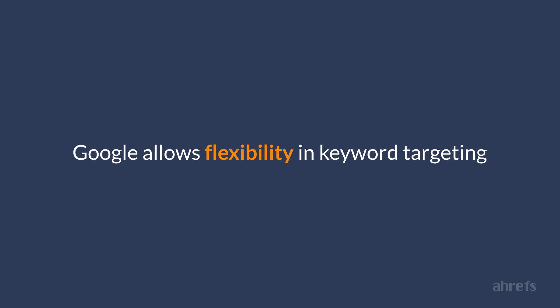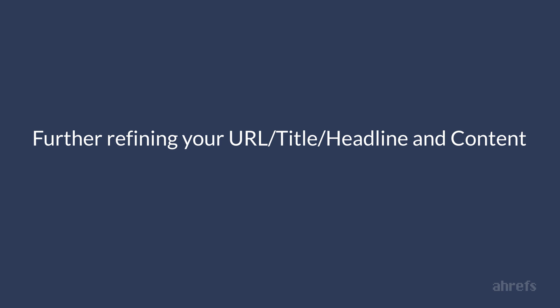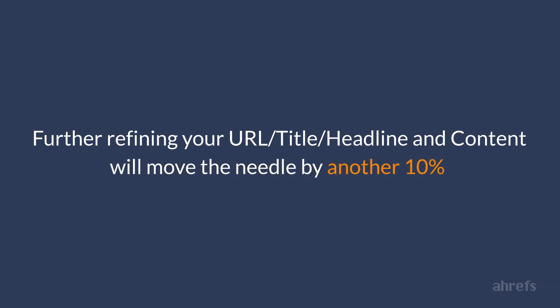That is why, by simply matching the searcher intent with the content of your article, you're already making it 80% relevant to the search query, because you are already using all the right words. Further refining your URL, title, headline, and content will probably move the needle by another 10%. This percentage is quite arbitrary — there's zero science behind it — but you get the idea.